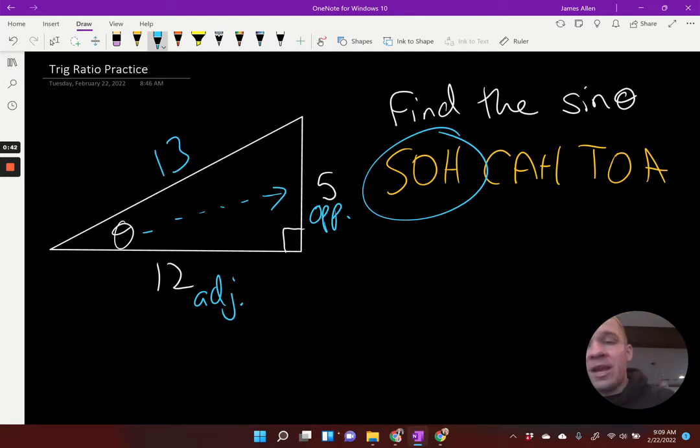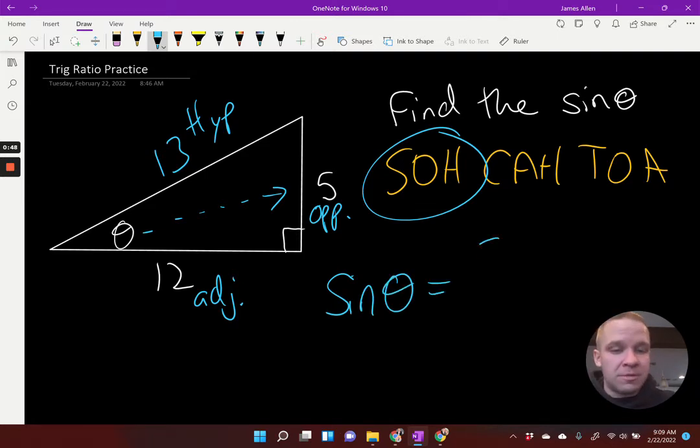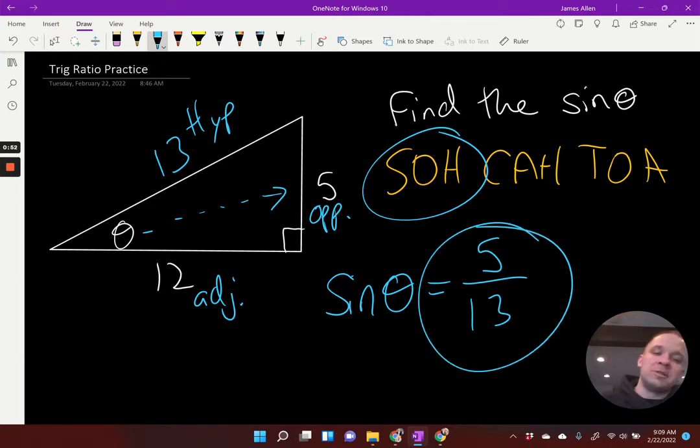All right. So now I want to find the sine of theta. Well, now I have my hypotenuse, right? So sine of theta is equal to the opposite, which is 5, over the hypotenuse, which is 13. 5 over 13 is my answer on this one. Excellent.